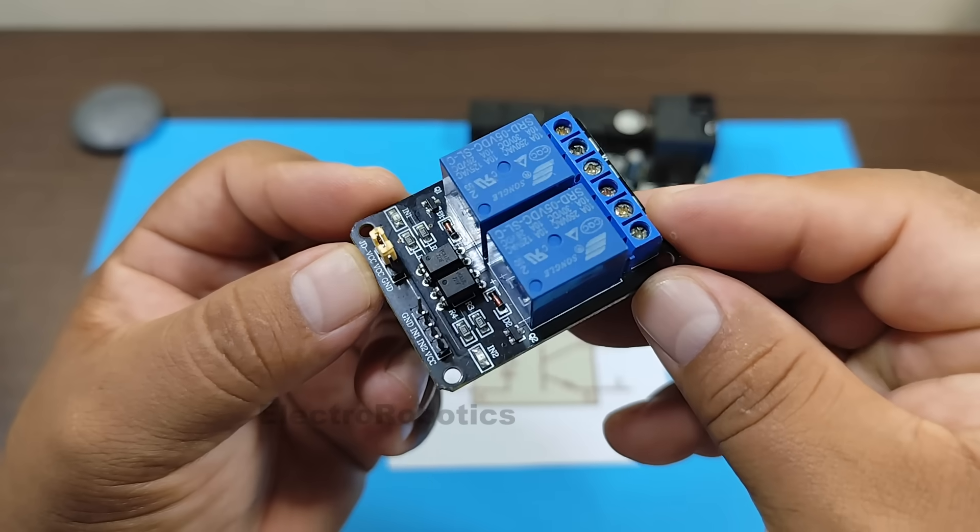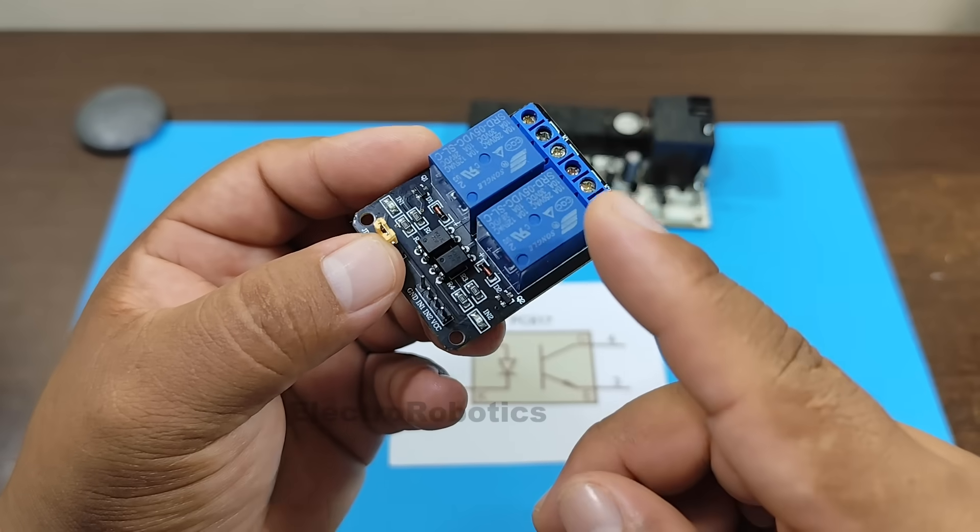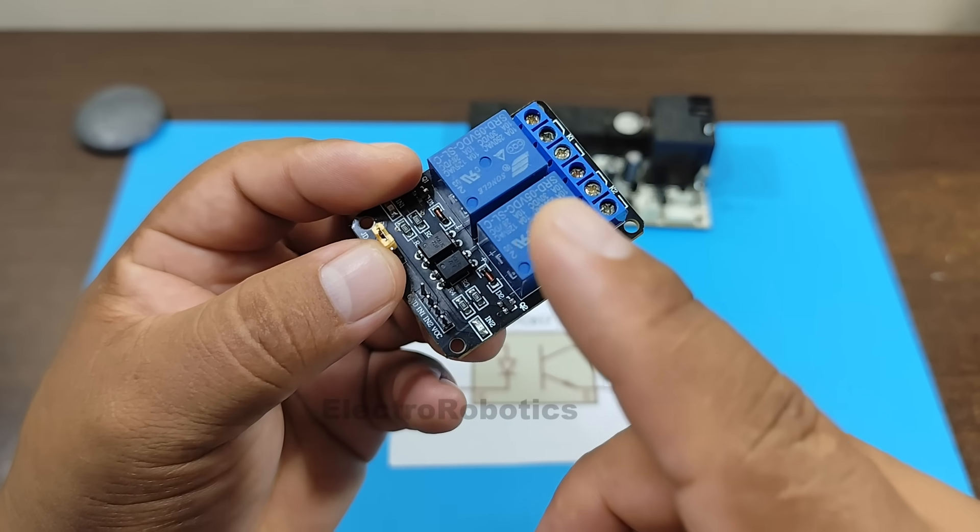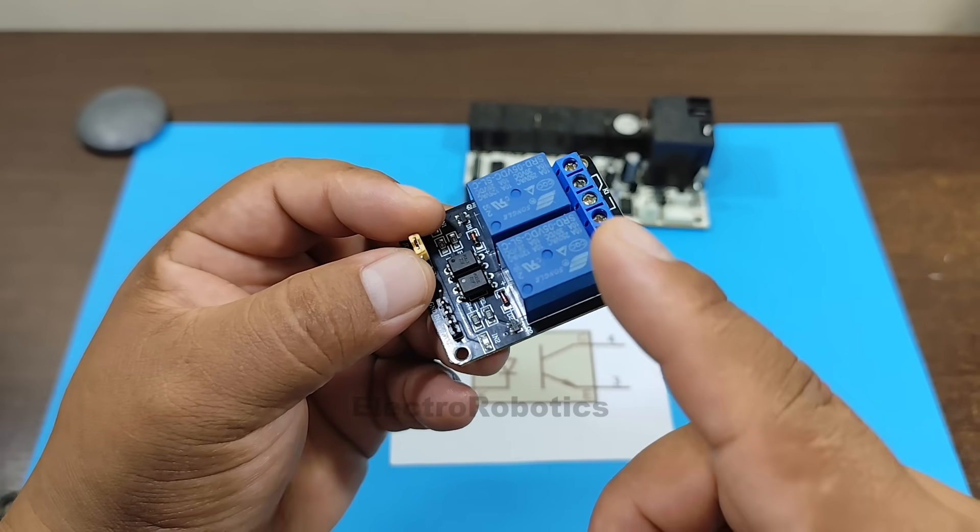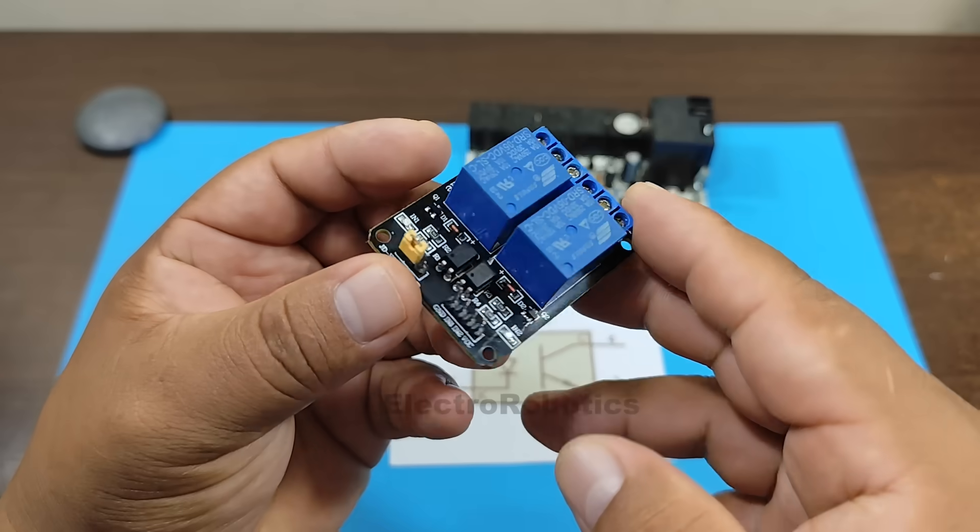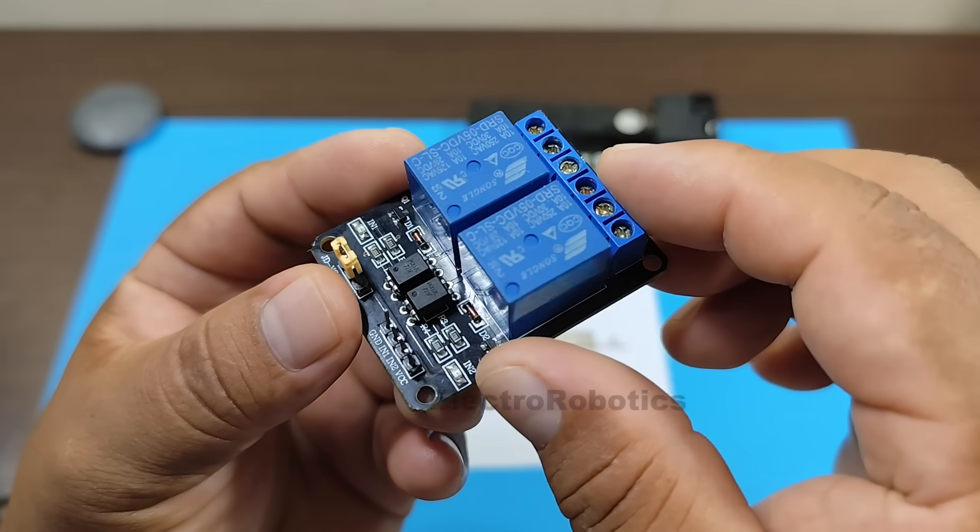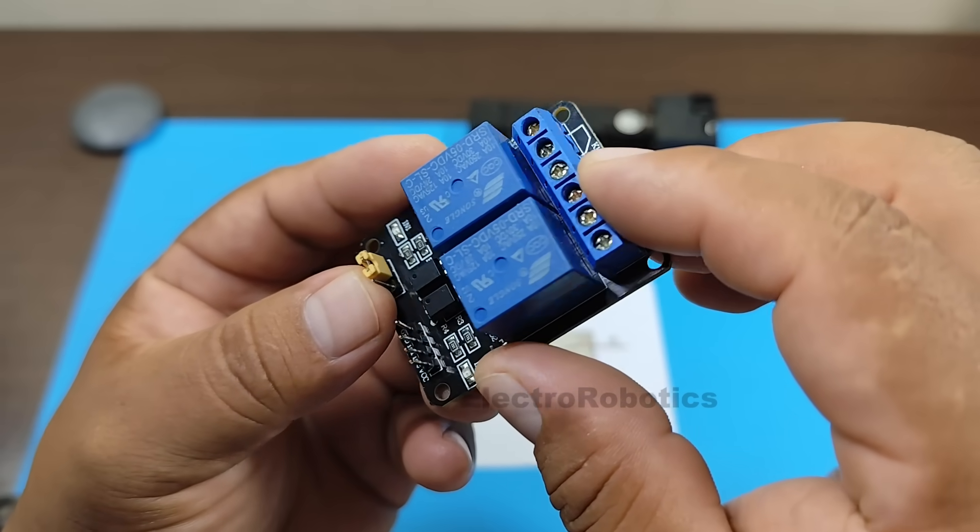This electronic board is a power module, which allows you to turn a motor, a lamp, or a whole piece of equipment on and off. Therefore, the optocoupler is very important on this electronic board.